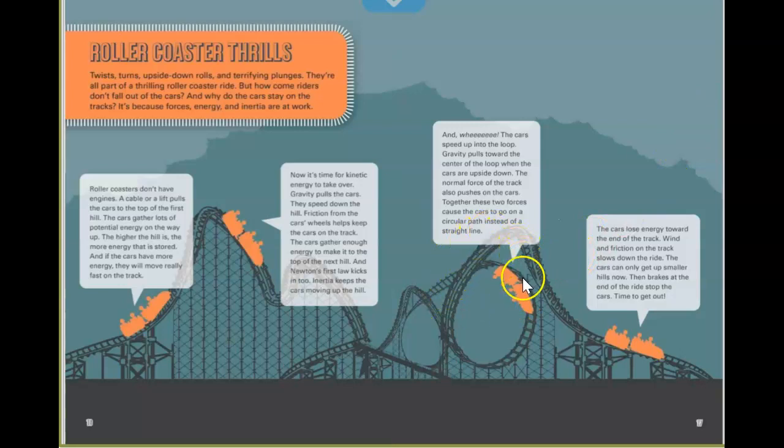The cars lose energy towards the end of the track. And wind and friction on the track slows down the ride. The cars can only get up smaller hills now. When the brakes at the end of the ride stop the car, then it's time to get out.